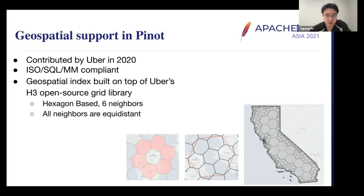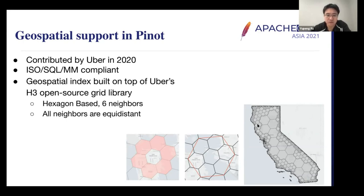The geospatial index is built on top of a gridding library from Uber called H3, which is also open source. The idea is to grid the geospatial space with hexagons. For each hexagon, it has six neighbors and all neighbors are equidistant — this nice property can greatly simplify many geospatial computations. There are also different resolutions of the grid, which are useful to approximate complex shapes. For example, this is how we use H3 to approximate the shape of California.